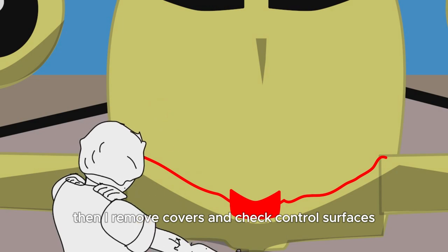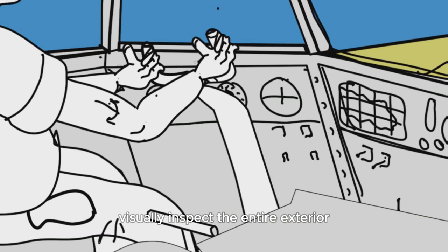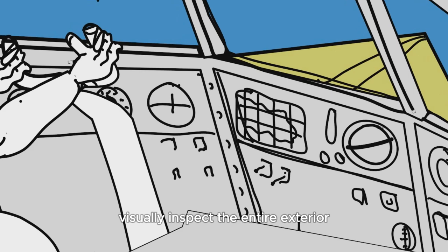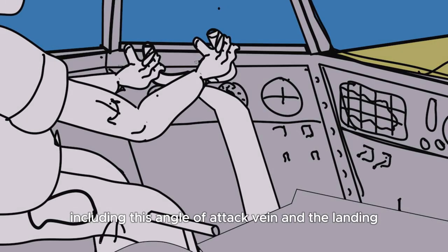Then, I remove covers and check control surfaces, visually inspect the entire exterior, including this angle of attack vane and the landing gear.